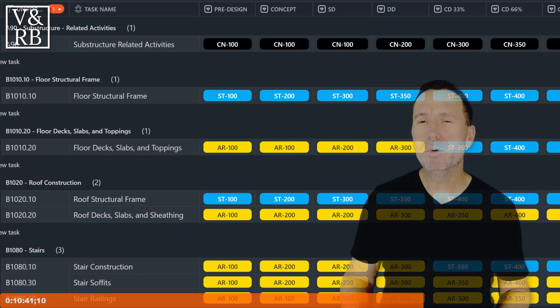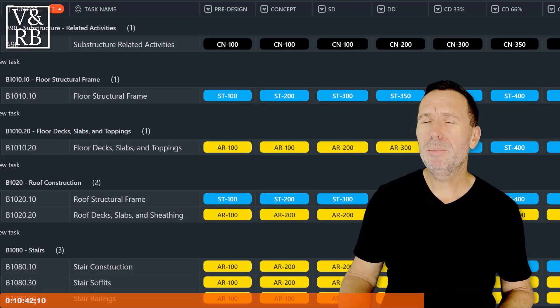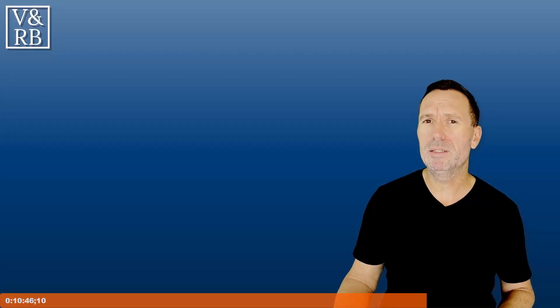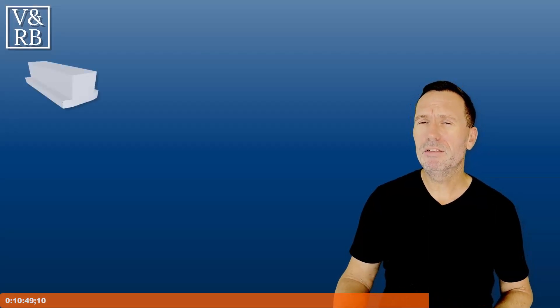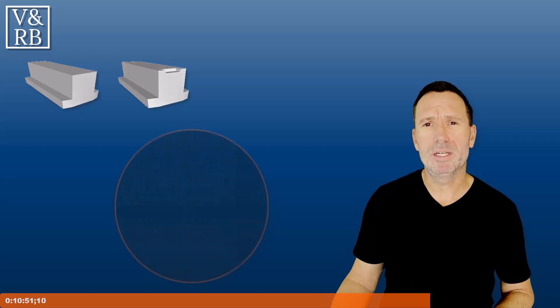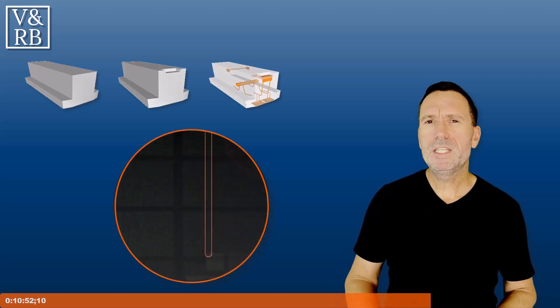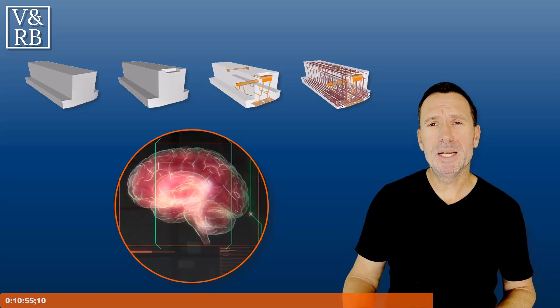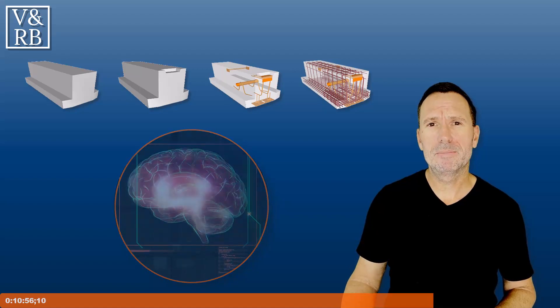Before we summarise, remember we'll be sharing our LOD matrix for you to download, and we'll also be explaining the name vellum and razor blades. In summary, we've discussed the importance of using level of development in the management of design projects. We've seen how LOD can act as the brain of the project and help us manage the chaos.